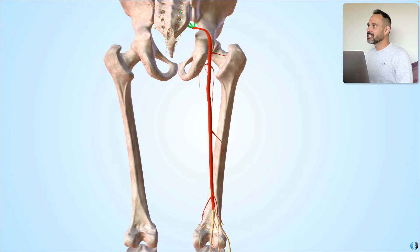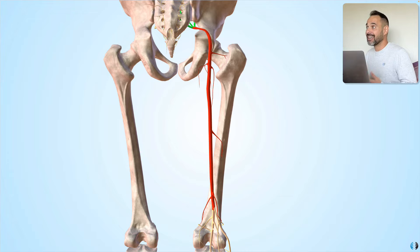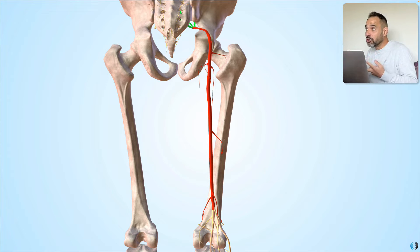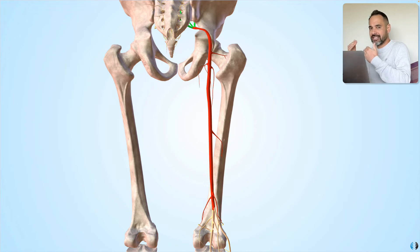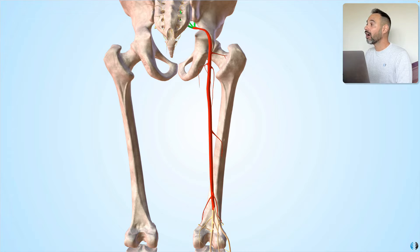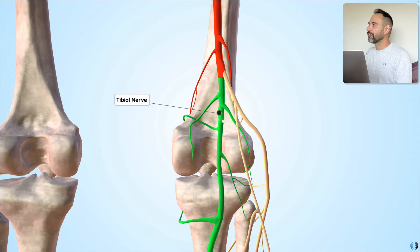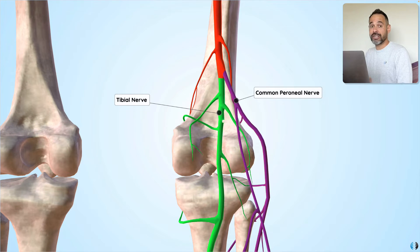The sciatic nerve runs down the back of the leg, which is super important because it tells us that when patients have sciatica, it's pain in the back of the leg they may experience — with a burning sensation, shooting pain, electric pain, or perhaps pins and needles or numbness in that region. When patients come to you with pain on the front of the leg, that isn't necessarily related to sciatica, because the sciatic nerve doesn't run there. From there, the sciatic nerve branches into two important divisions: the tibial nerve and the common peroneal nerve.